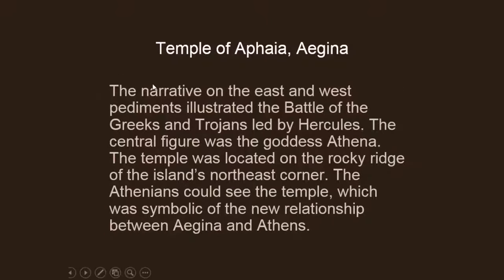The narrative on the east and west pediments of the Temple of Aphaia illustrates the battle of the Greeks and Trojans, and we've already seen the dying warriors as a precursor. The central figure is the goddess Athena. This temple sits on a rocky ridge on the island's northeast corner, so from the Acropolis the Athenians can look over and see it — symbolic of the new relationship between Aegina and Athens.